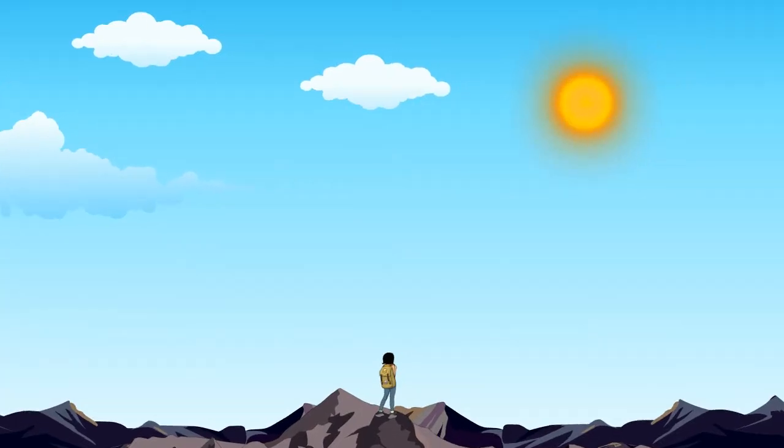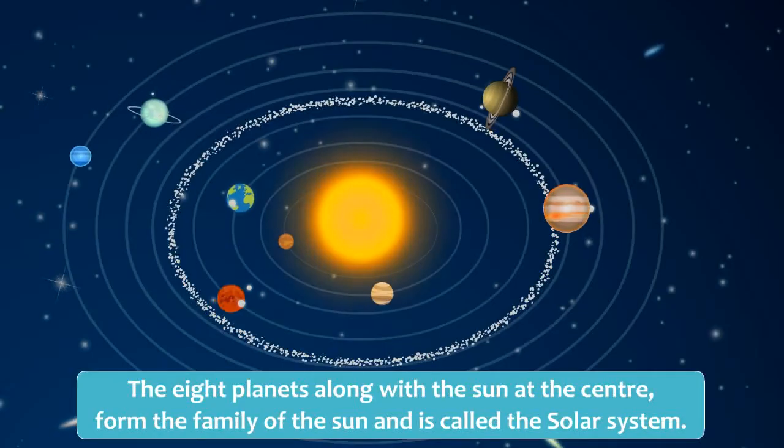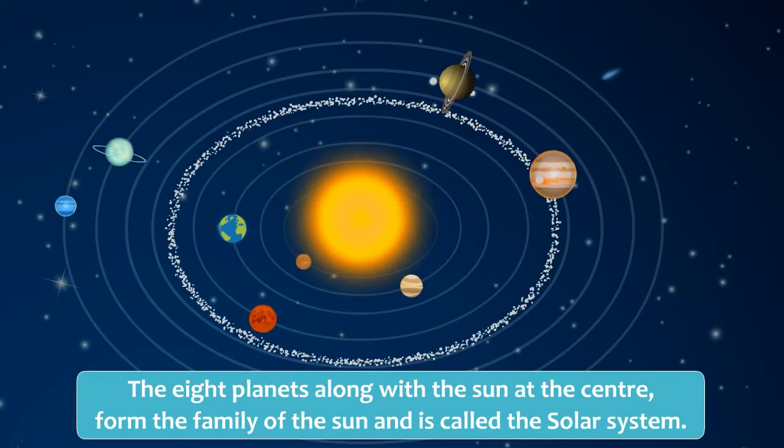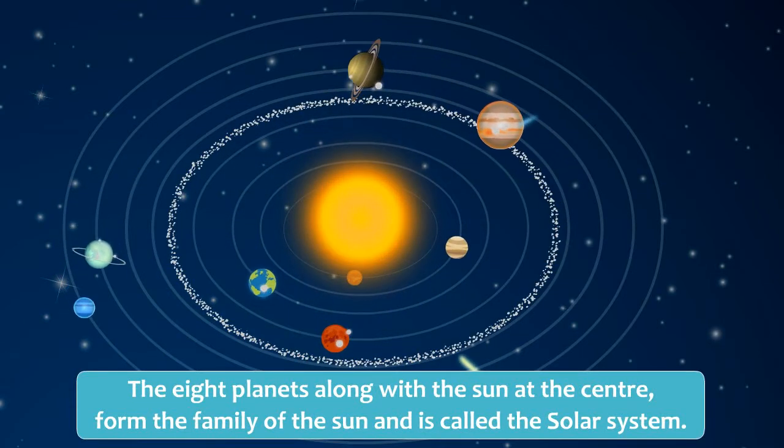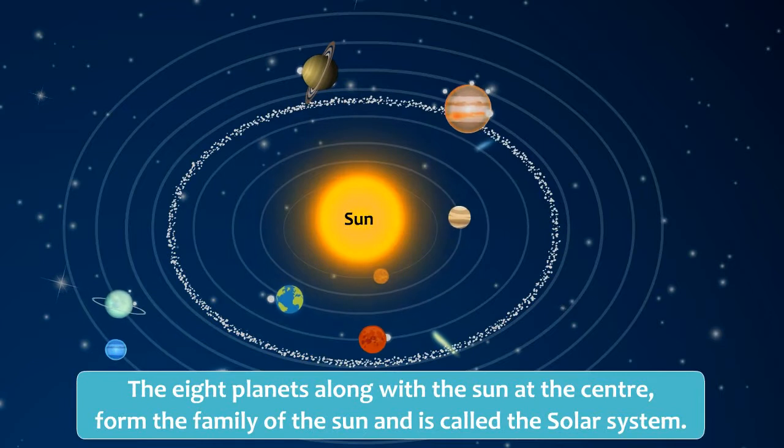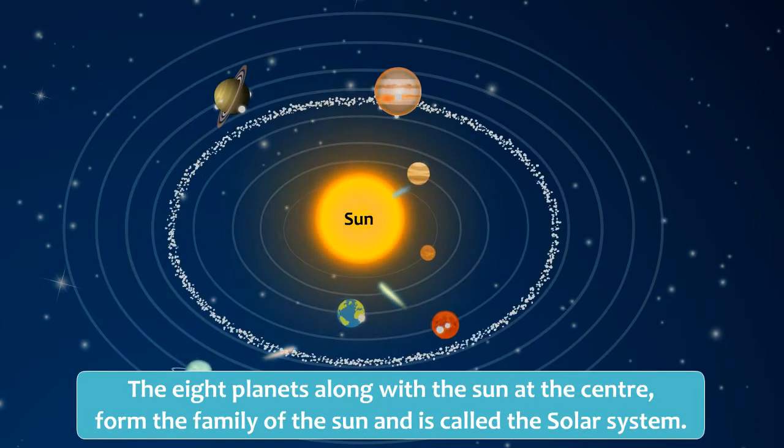When we see the Sun from the Earth, it appears alone in the sky. But this is not so. The Sun is surrounded by eight planets. These eight planets, along with the Sun at the center, form the family of the Sun and is called the Solar System.